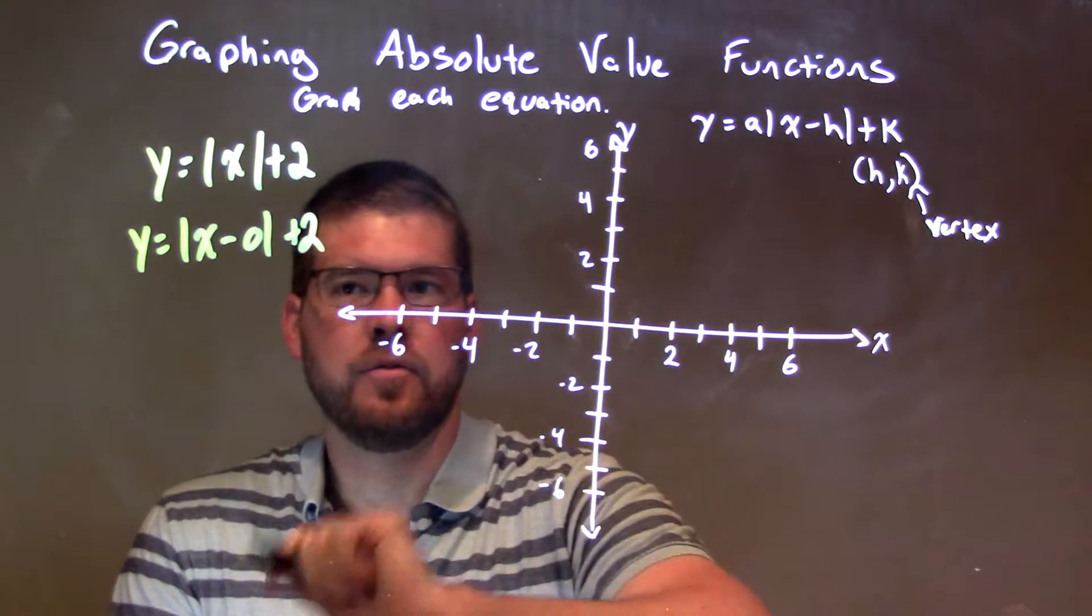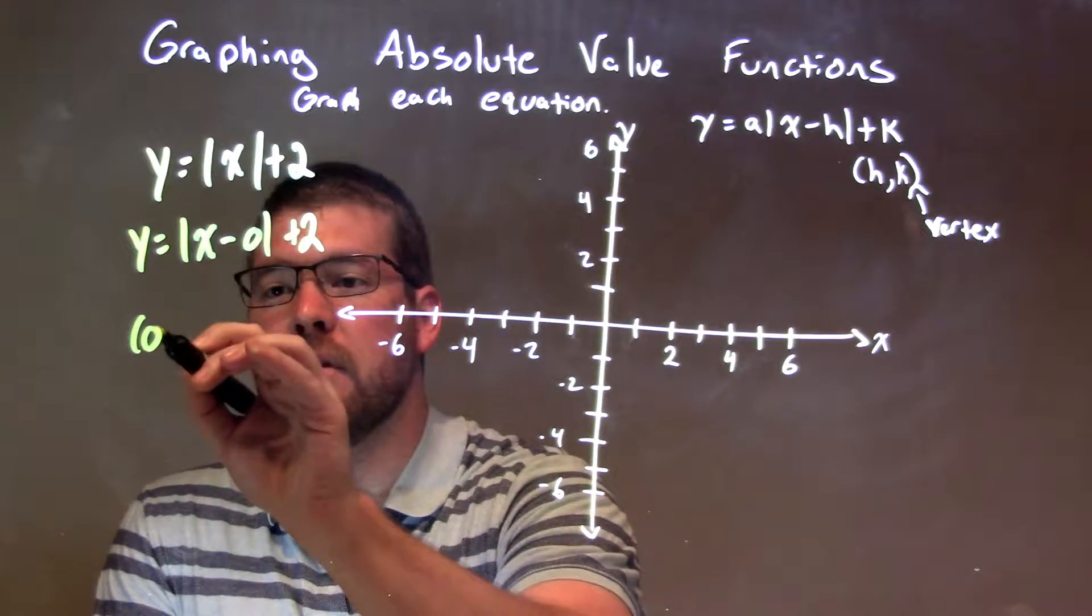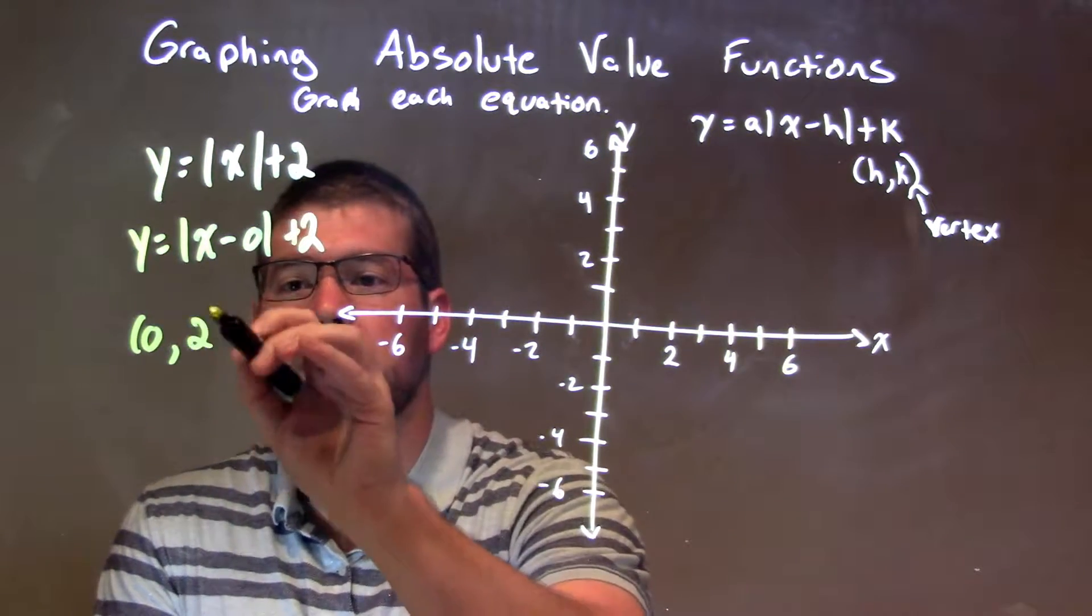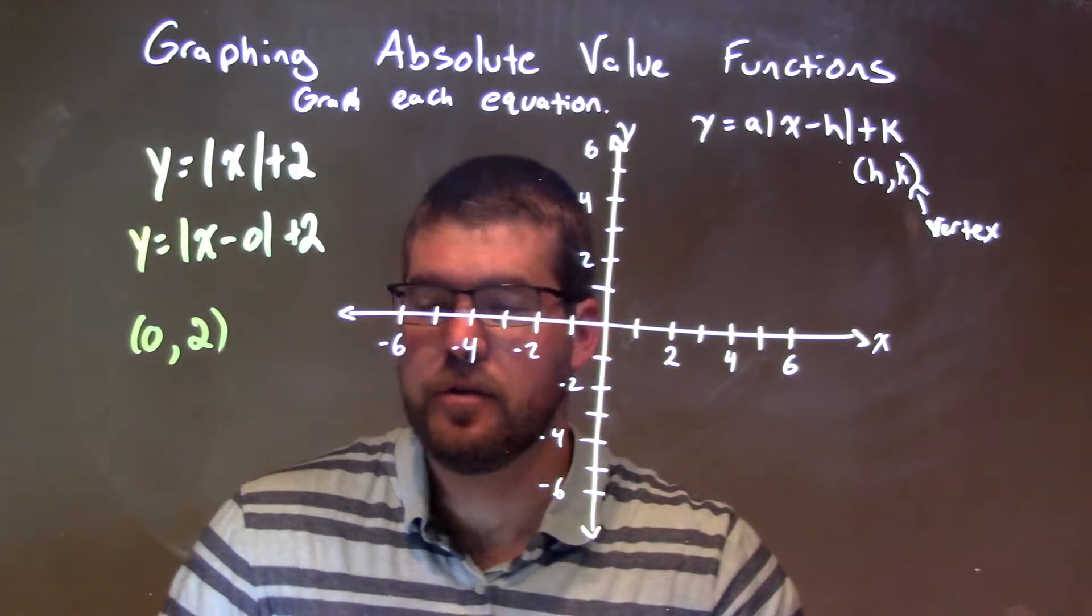So we have, these are the same things, right? Our h value is 0, so there's 0 here, and our k value is positive 2. So our vertex is just 0,2.